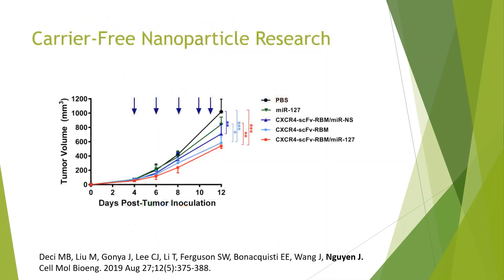The nanoplexes were also tested in pre-clinical studies with encouraging results. The nanoplex with that microRNA is denoted by the red line, which can be seen to have inhibited tumor growth the most and had a significant impact in comparison to the control.